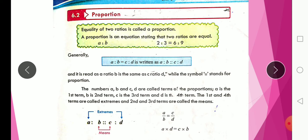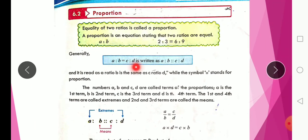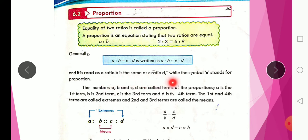In a proportion, you have an equation telling you that two ratios are equal. Generally, you can say that A:B is equal to C:D. It is written as A:B :: C:D and read as 'the ratio A:B is the same as C:D.' The symbol for proportion is four dots — the double colon symbol.